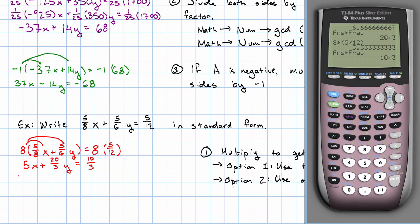So, I'll multiply both sides by 3. I'll have 3 times 5 is 15x, plus 3 times 20/3 is 20y, equals 3 times 10/3 is 10.